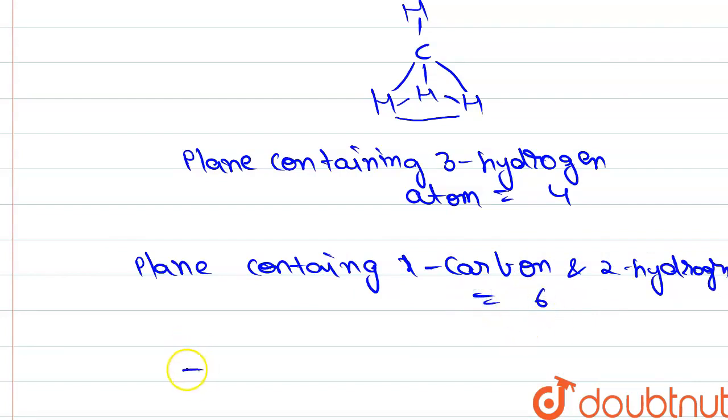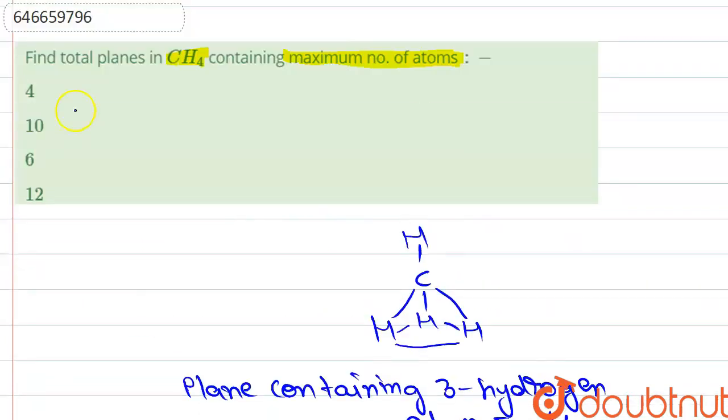So total number of planes will be six plus four, that is ten. So there will be total ten planes which contain three atoms in one plane. So our answer will be our second option, that is ten planes. Thank you.